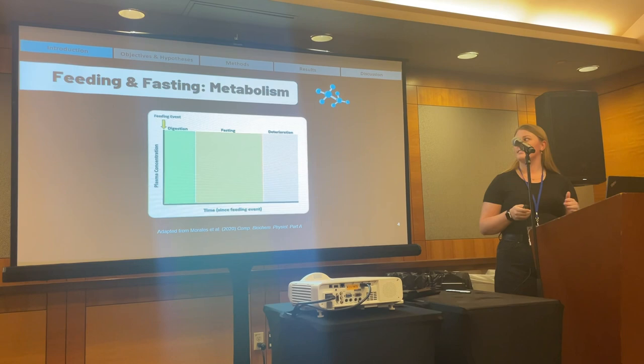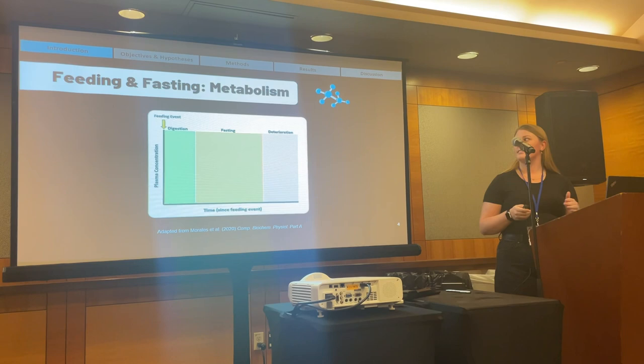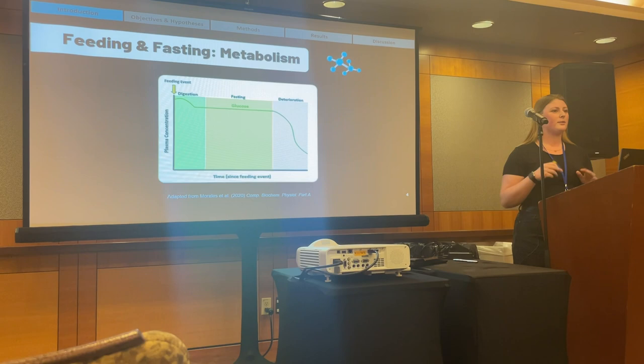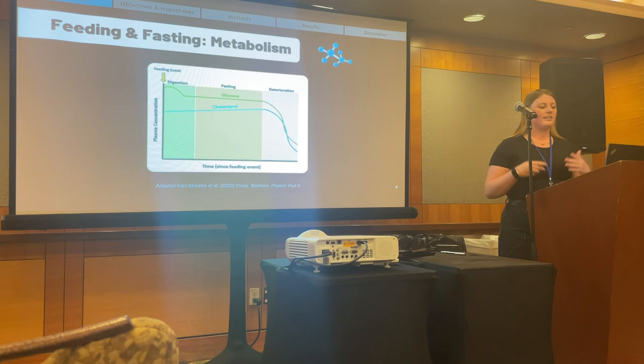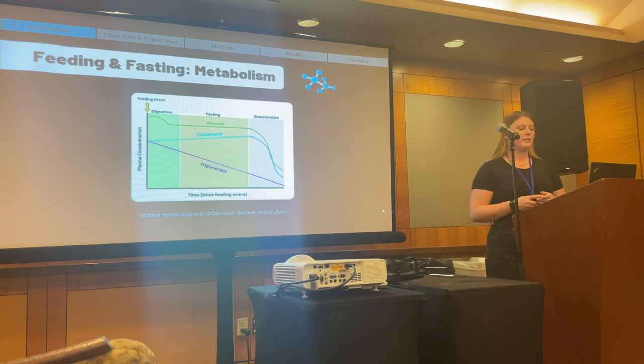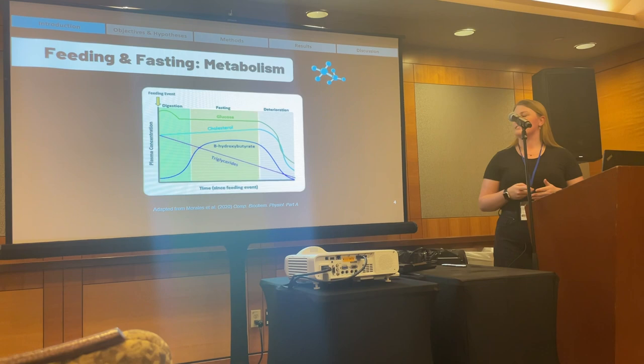Today we're going to focus on four key energetic metabolites. First is glucose — a high-energy, short-term energy source that's highly regulated in the body due to its key roles in the central nervous system and brain. We also have cholesterol, which is more indicative of long-term energy intake; triglycerides, which are fats used as energy reserves in the body; and beta-hydroxybutyrate, a ketone body produced from the breakdown of fatty acids during fasting.